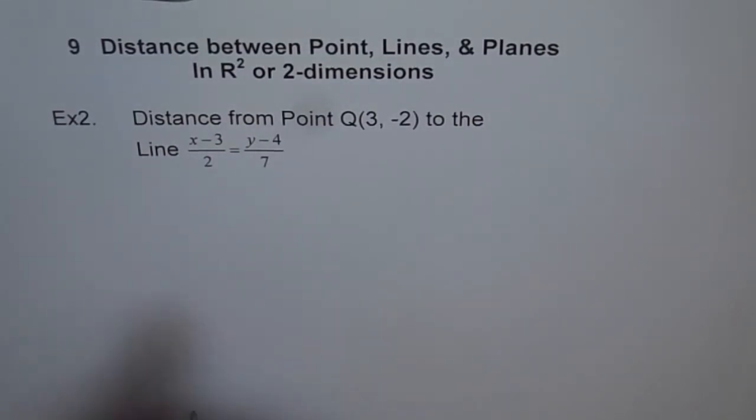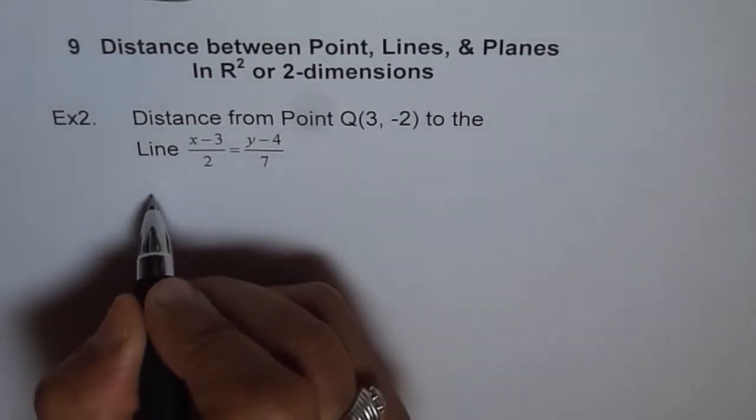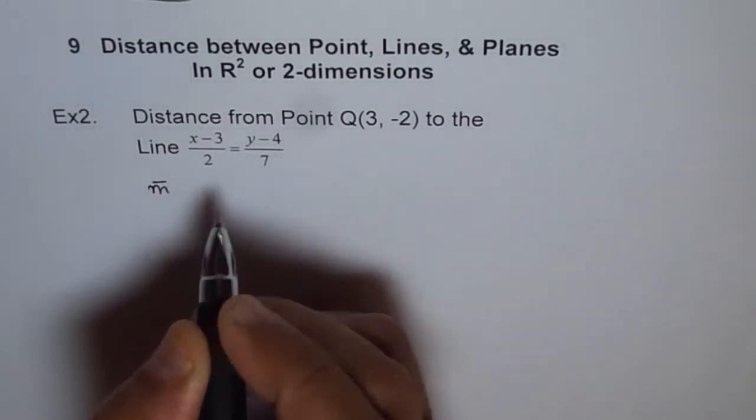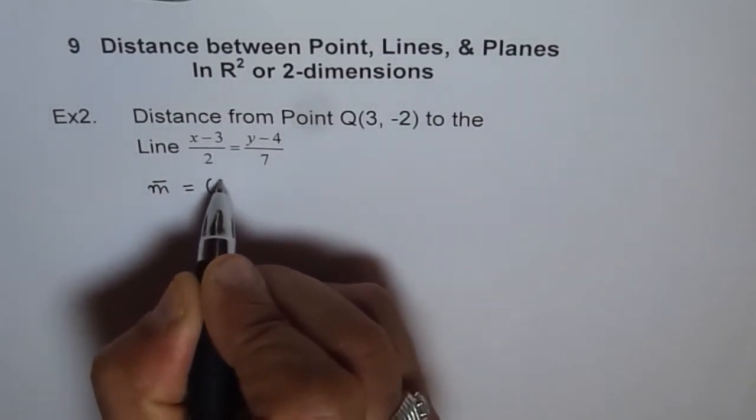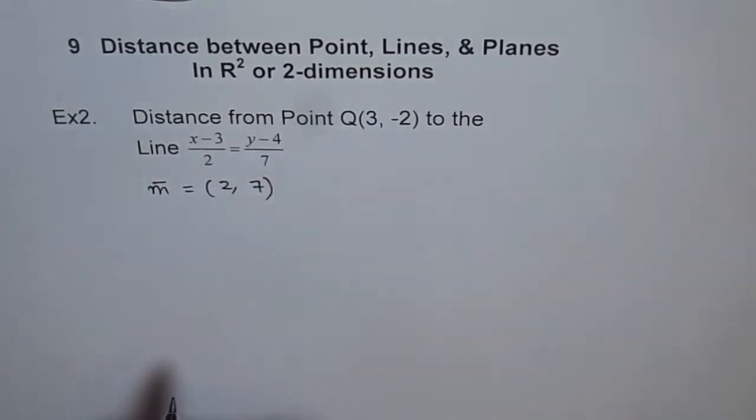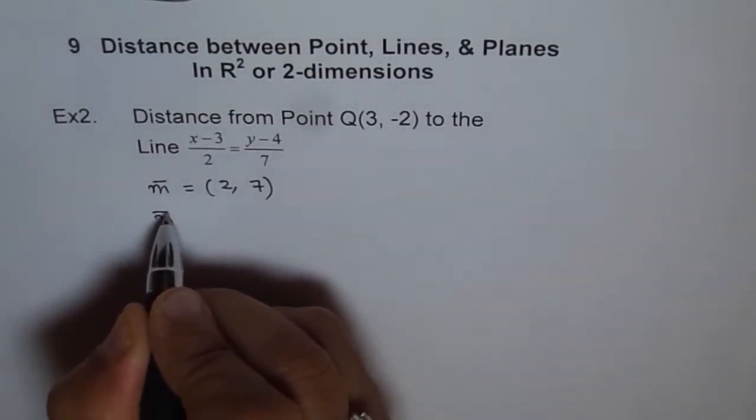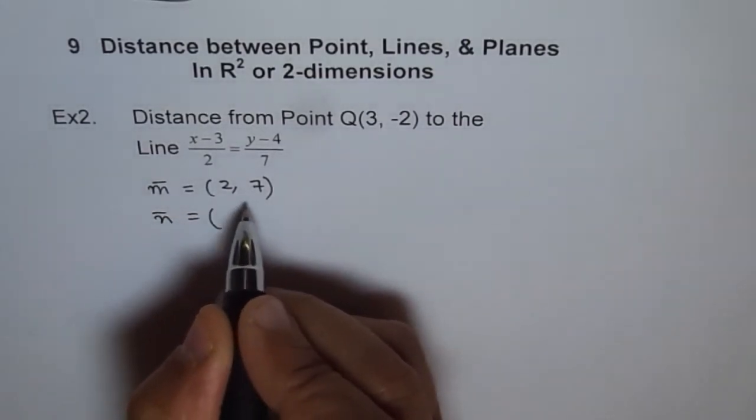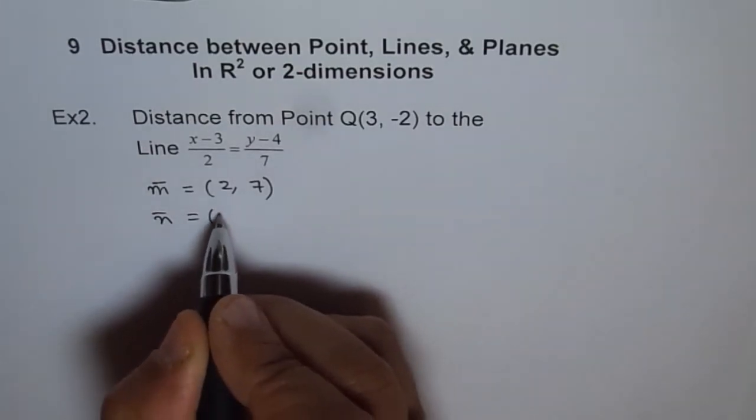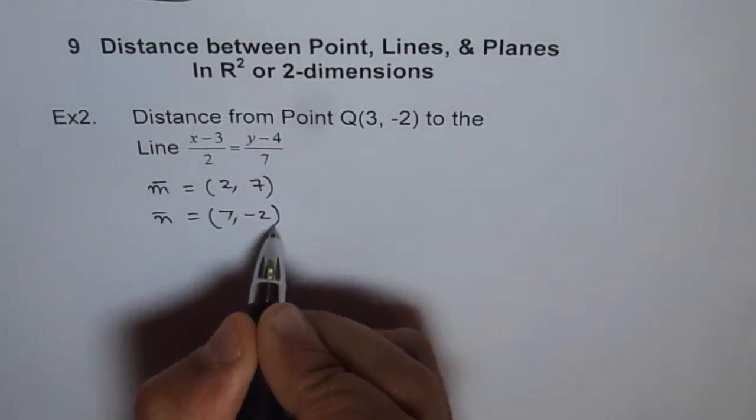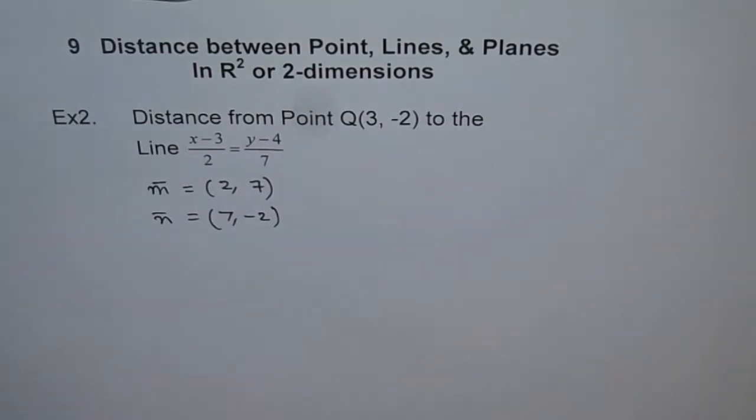So that is the symmetric form of our line where the direction is given as m. Direction vector is equal to (2, 7). Whenever you want to find the shortest distance, you are interested in the normal. So the normal vector will be, we can interchange it and make one of them negative. So let us make 2 negative. So that becomes (7, -2) our normal vector.